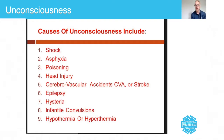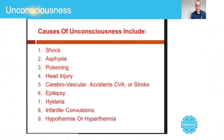Let's take a look at some of these causes of unconsciousness, because you are going to need to use this to work out the reason why they're unconscious in order to treat it. Number one is shock. There are five classifications of shock — we're going to have another session on that. Basically, whenever there's reduced oxygen to the tissues, this is a state of shock which causes hypoxia.